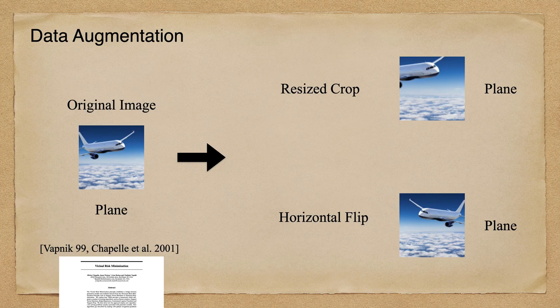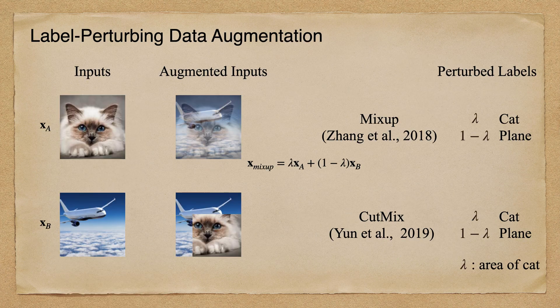Data augmentation is a widely used and powerful technique that creates synthetic data from existing data. It acts as a regularizer and helps reduce overfitting when training a machine learning model. As one of the most popular data augmentation schemes, label perturbing data augmentation aims to augment the data by perturbing the inputs and labels.